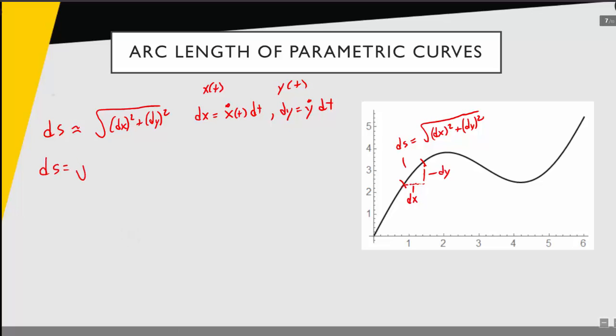Now we have these two representations for dx and dy. Let's just plug those into our expression. Now we have ds is equal to the square root of, here I have x dot the derivative of x with respect to t, dt quantity squared, plus y dot the derivative of y with respect to t, dt quantity squared. And I'll square each of these pieces, and then I'll have a dt squared in both pieces, so I'll factor that out. It looks like I'll get x dot squared, that quantity, plus y dot squared.